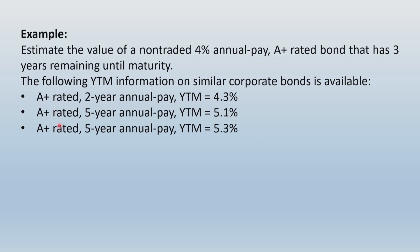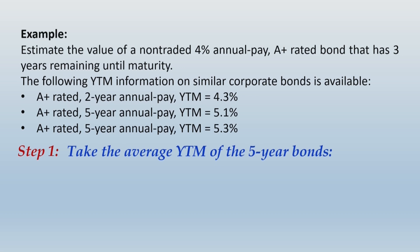First, focus on the two 5-year bonds. Both are 5-year annual pay bonds with very close but slightly different YTMs of 5.1% and 5.3%. You can average these two out, and that average will be considered as the YTM for a 5-year annual pay A+ rated bond. That average comes to 5.2%. So 5.2% is for a 5-year bond and 4.3% is for a 2-year bond.